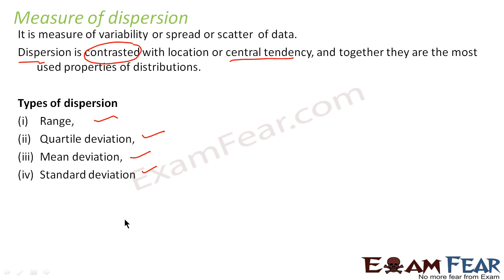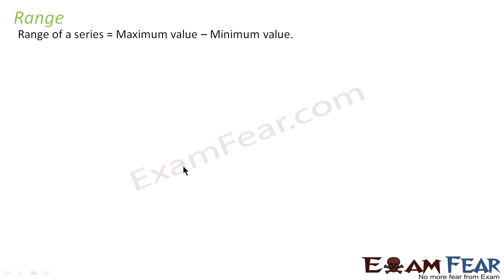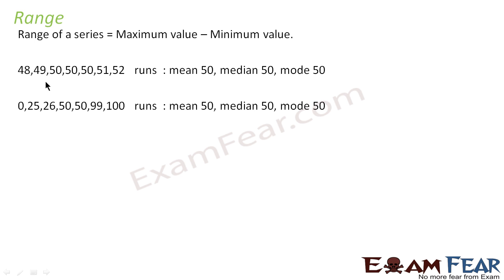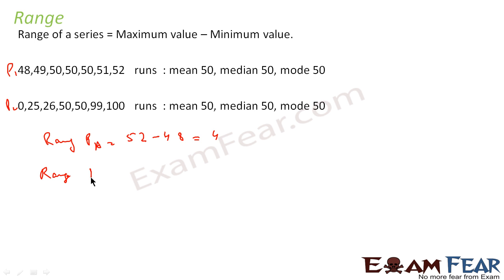What is range? Range is nothing but maximum value minus minimum value. For the same data with Player 1 and Player 2 — for Player A, the maximum value is 52 and the minimum is 48, so range is 52 minus 48, which is 4. For Player B, the range comes out to be 100. If told the range of Player A is 4 and Player B is 50, the only thing I can say is Player A is consistent and Player B is not, but I can't tell whether it is good or bad.